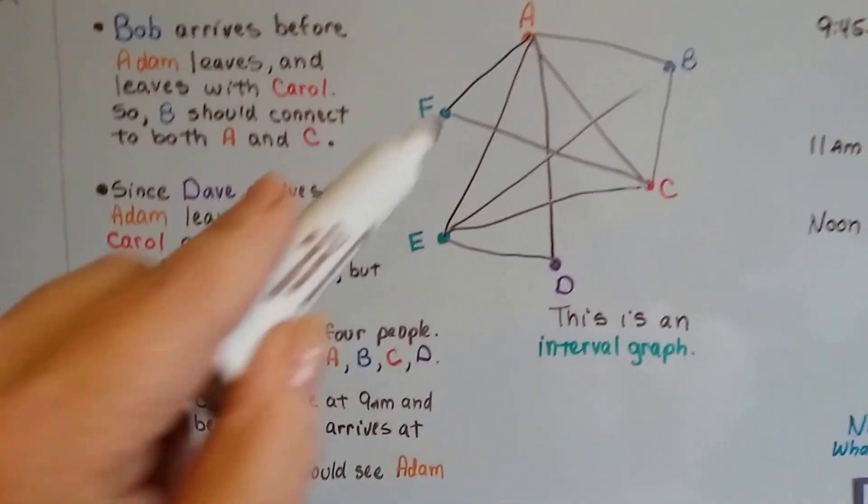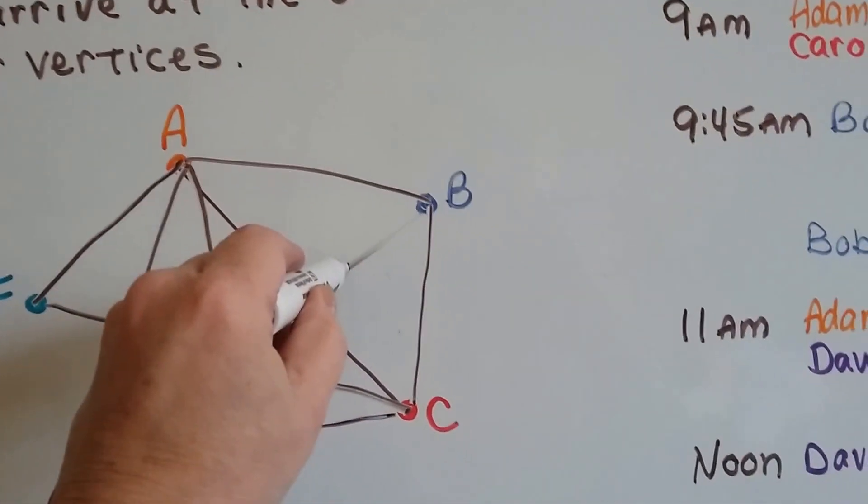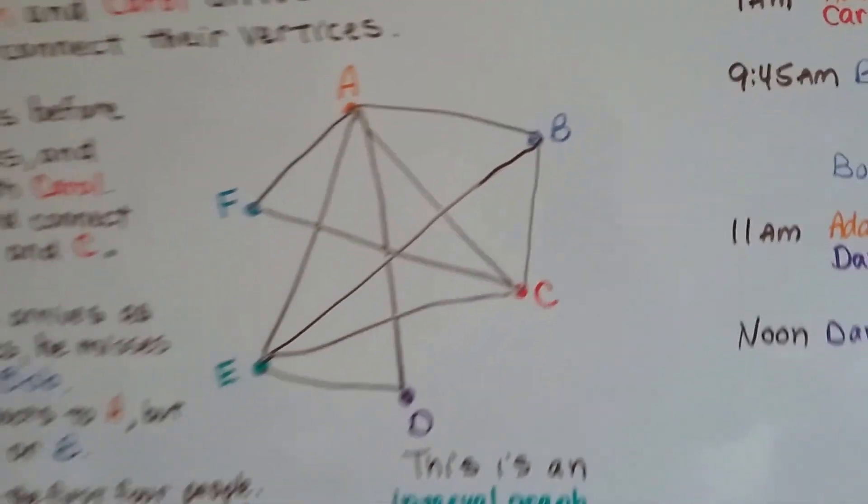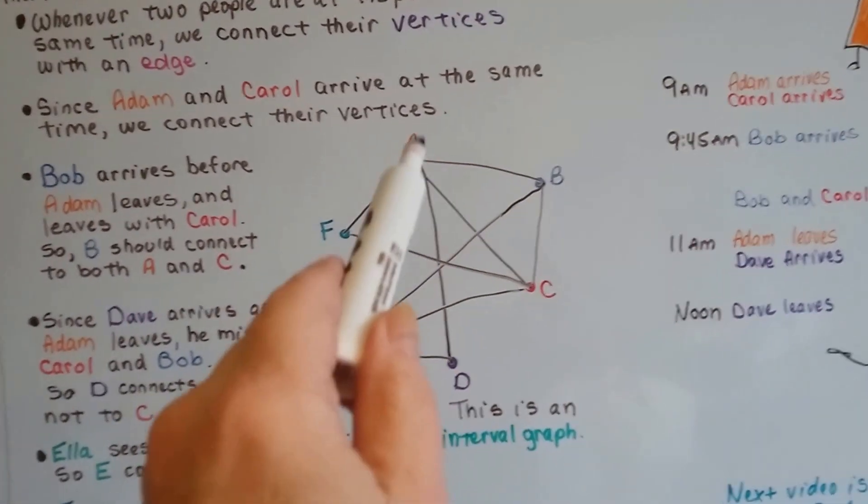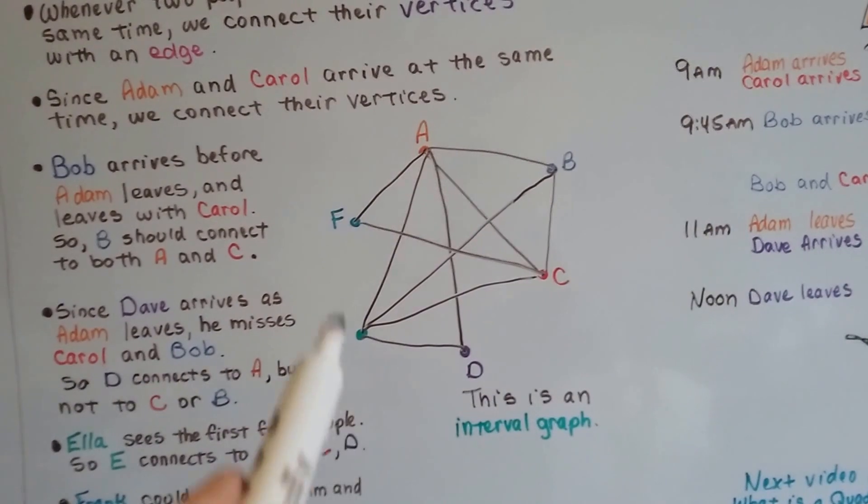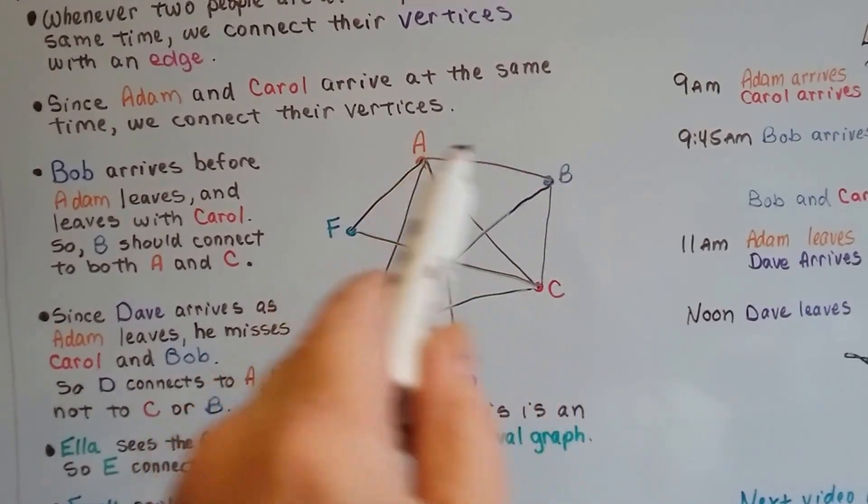So this is an interval graph. It says how many people could Bob see at the swimming pool. We see all the edges, we see all our vertices. Here's Bob, B. How many lines does he have coming out of him?